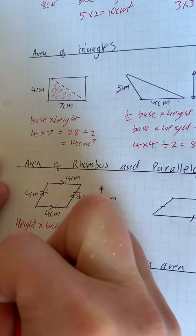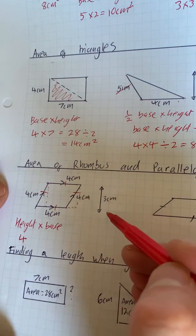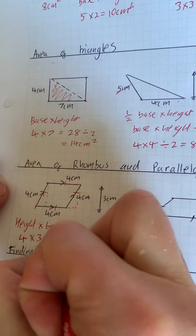So we have got 4, and our height is this vertical height going straight up, times 3, which is 12 centimeters squared.